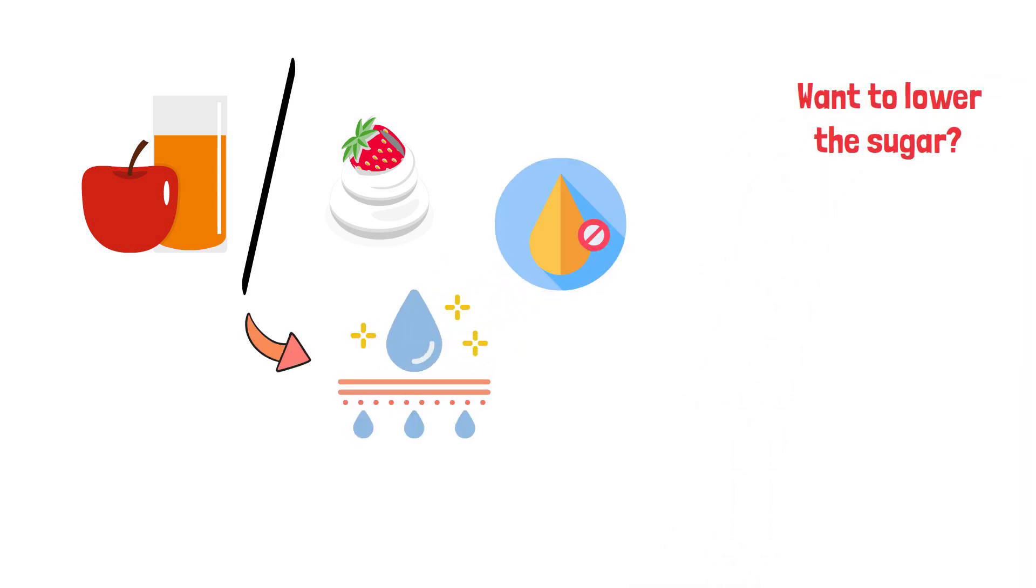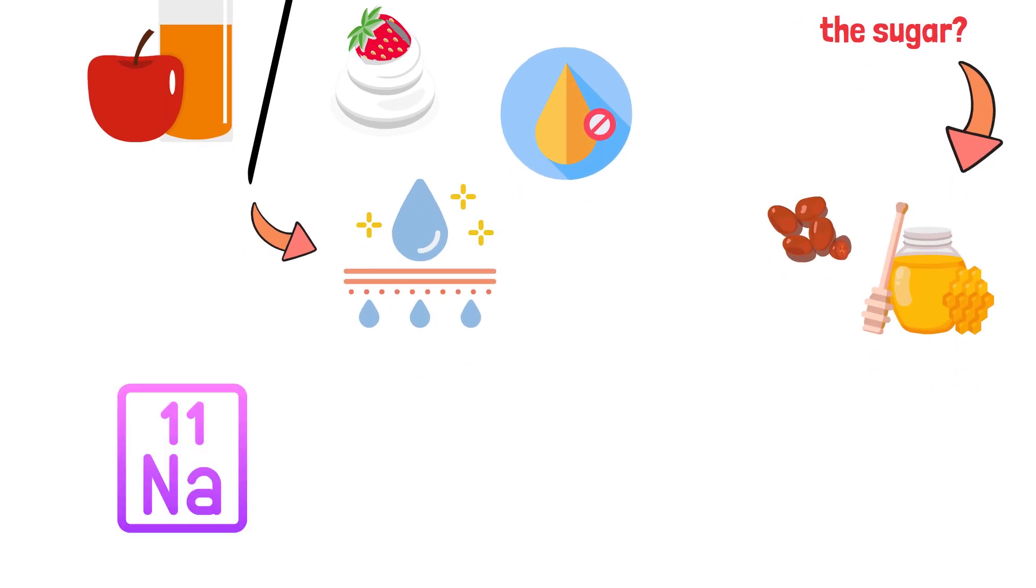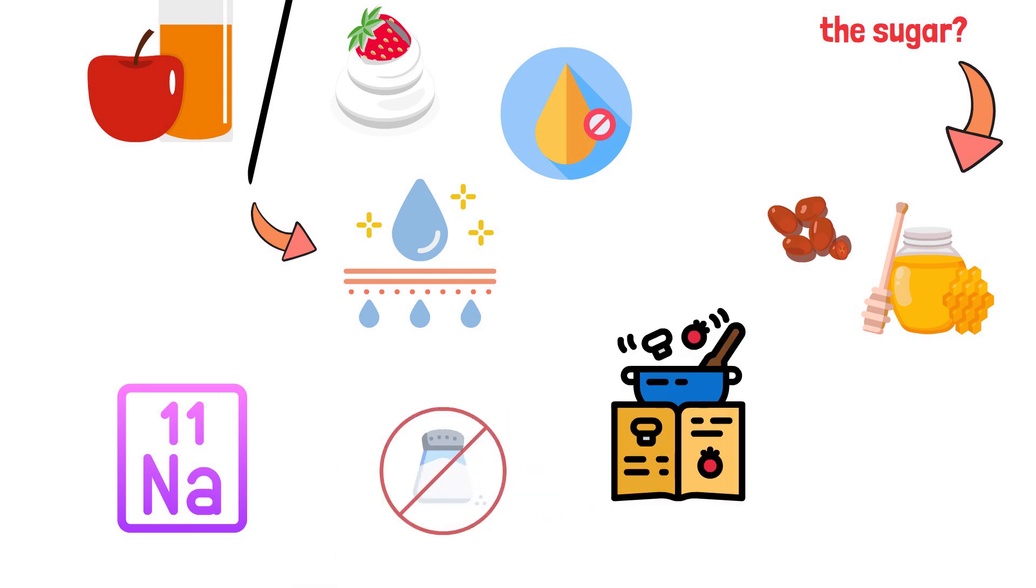Want to lower the sugar? How about using natural sweeteners like dates or honey? And for those watching their sodium, a simple reduction, or even an occasional skip of salt in certain recipes, can work wonders.